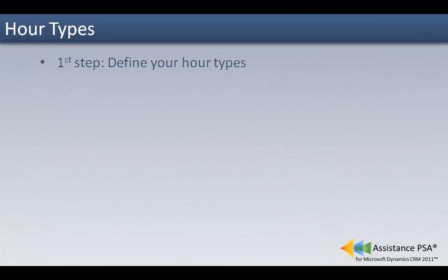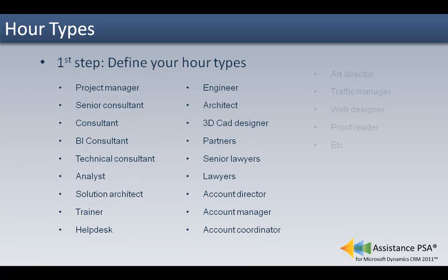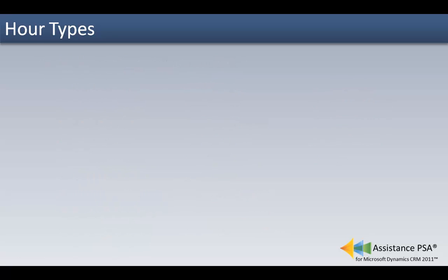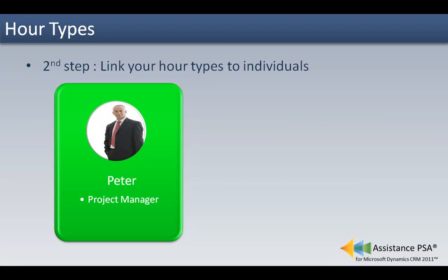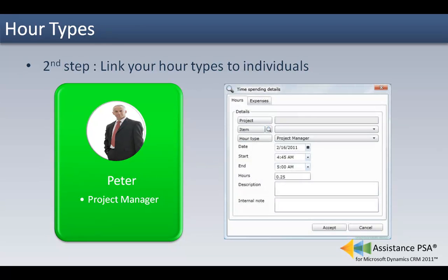In order to book hours in Assistance PSA, you must first configure the different hour types of your organization. Once this is done, you need to assign specific hour types to people. By doing so, the hour type will automatically appear in the time entry window of the individual's timesheet. Consequently, an employee will only have access to the hour types that have been assigned to him or to her.